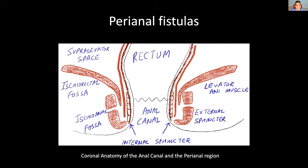Between the internal and external sphincter is the inter-sphincteric space, which is an important closed space. If there is an abscess in this inter-sphincteric space, that needs to be drained ASAP. The external sphincter is a voluntary striated muscle divided into three layers that function as one unit. These are continuous cranially to the external sphincter, puborectalis, and levator ani muscle. The inter-sphincteric space lies between the internal and the external sphincter.